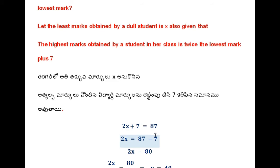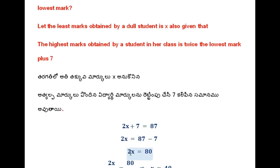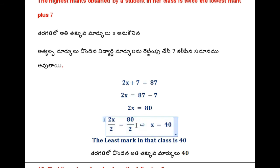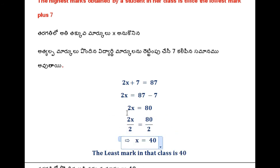Transposition of plus 7 becomes minus 7. Subject already lies on the left side of the equality. To make the coefficient of the subject equal to 1 — dividing by 2 on both sides. 2x is equal to 87 minus 7 is equal to 80. Dividing: x is equal to 40.